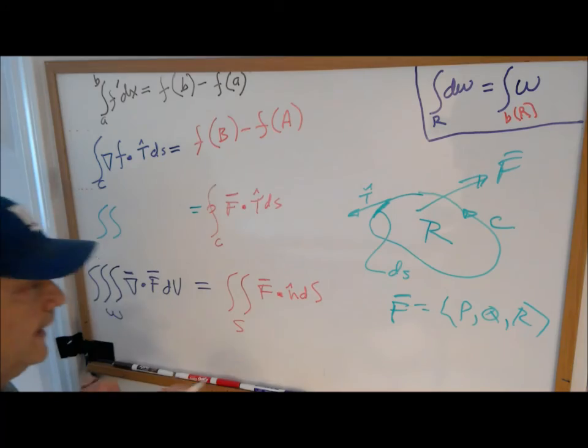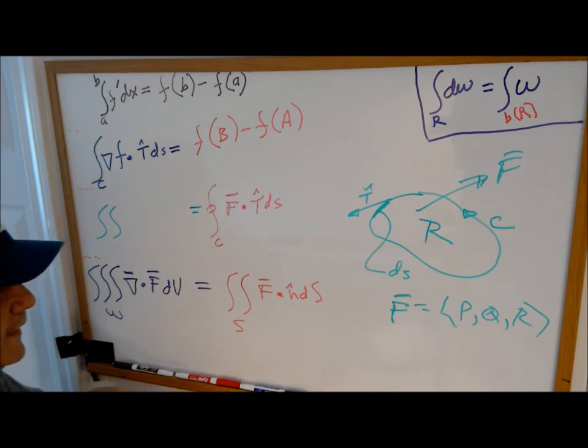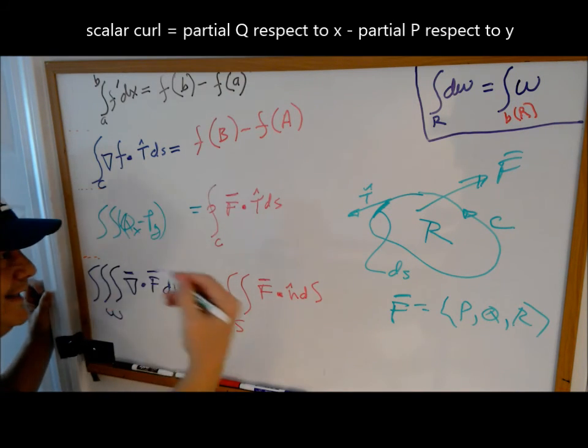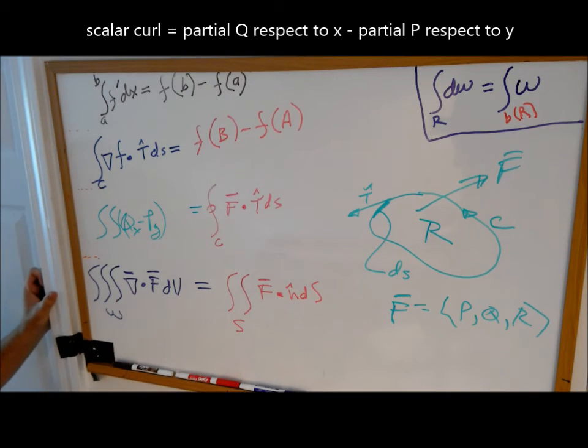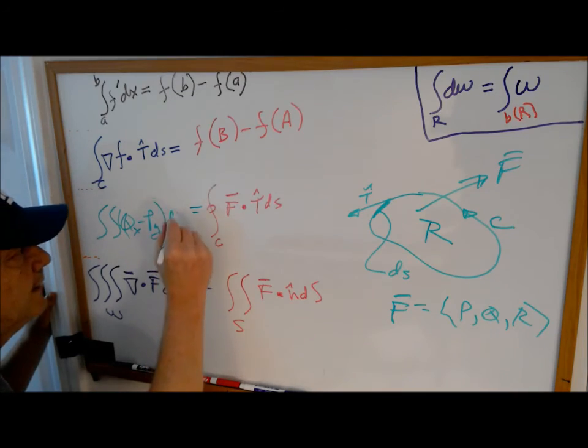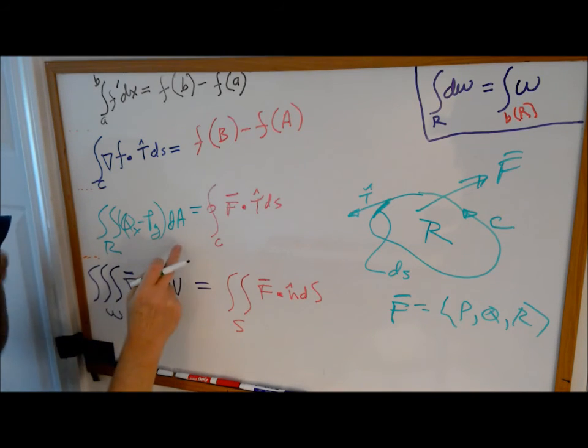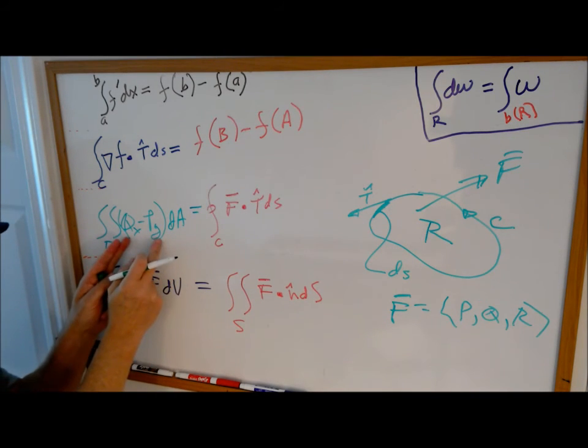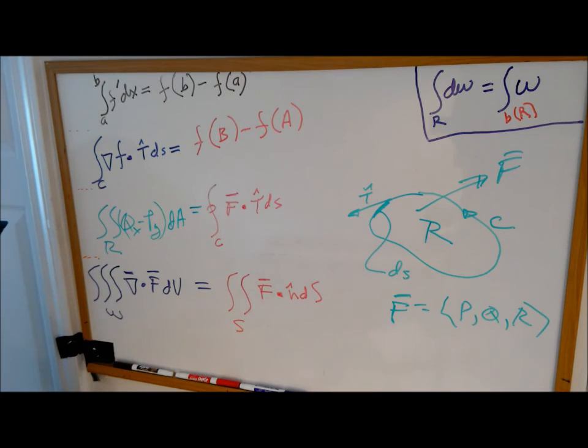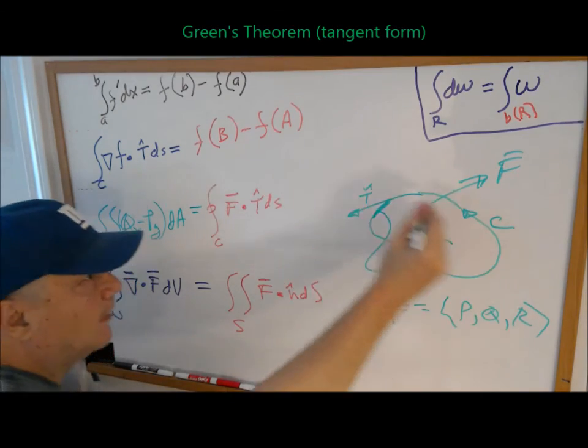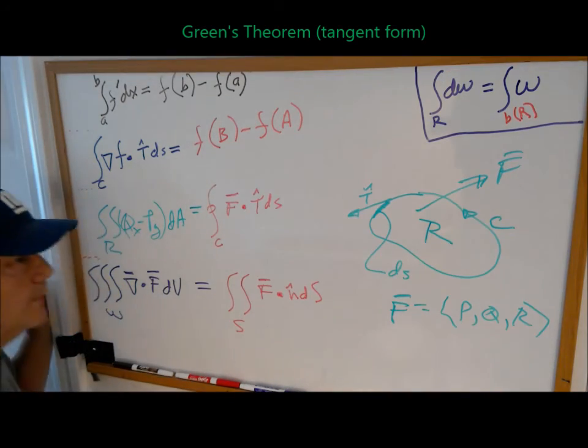And when we do that, let's say the vector field F has components p, q, r. The scalar curl, when you dot it with k, becomes partial q with respect to x minus partial p with respect to y times, not dS or n dS. It's going to be simply dA because it's over the region. So it becomes just a regular old double integral. But it's still curl. It's just scalar curl. That's called Green's theorem in the tangent form because we're measuring work or flow.